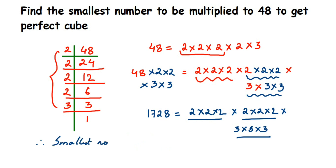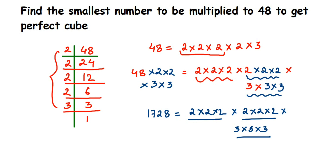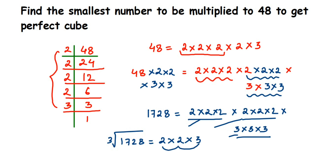Now if they ask you to find the cube root of 1728, from each set of three you take one factor. From the first set take one 2, from the second set take another 2, and from the 3s set take one 3. So cube root of 1728 = 2 × 2 × 3 = 12. Whichever numbers are missing to form a set of three — those are the numbers you multiply with the given number, and that is your smallest number to be multiplied.